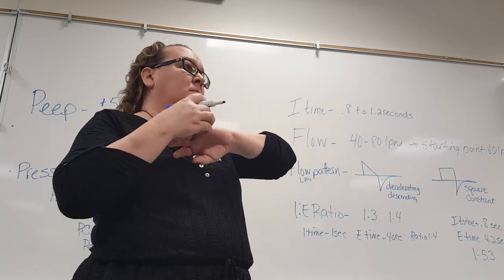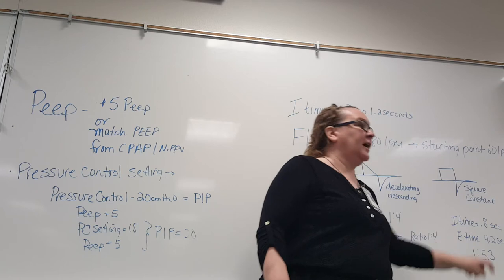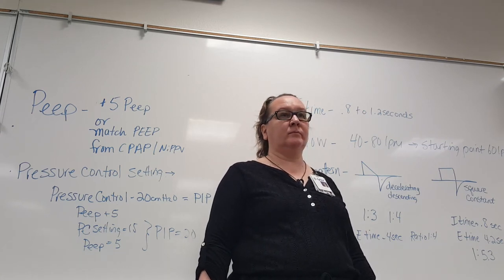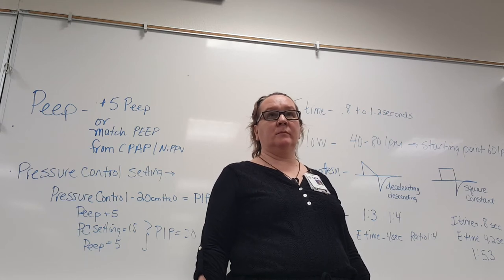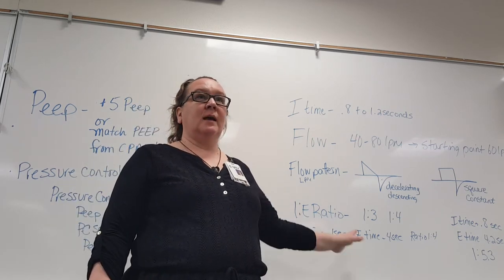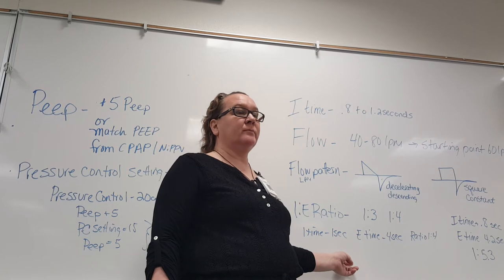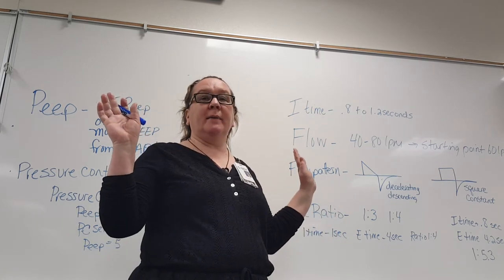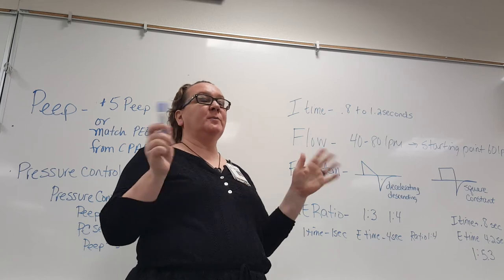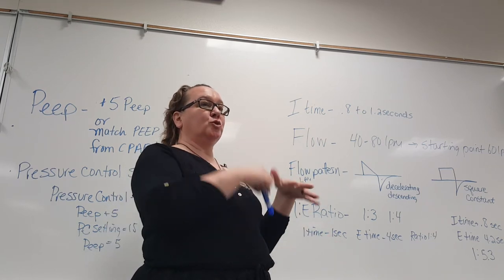You always put a 1 in front because we're expressing a ratio of 1 to something. Don't worry if your ratio is too high — we worry about it if it's too low. People sometimes say they can't set an I-time there because it makes the ratio 1:6 — that doesn't matter. Just like over-compliant lungs are not our problem, under-compliant lungs are. Ratios that are too short are going to cause problems for your patient.